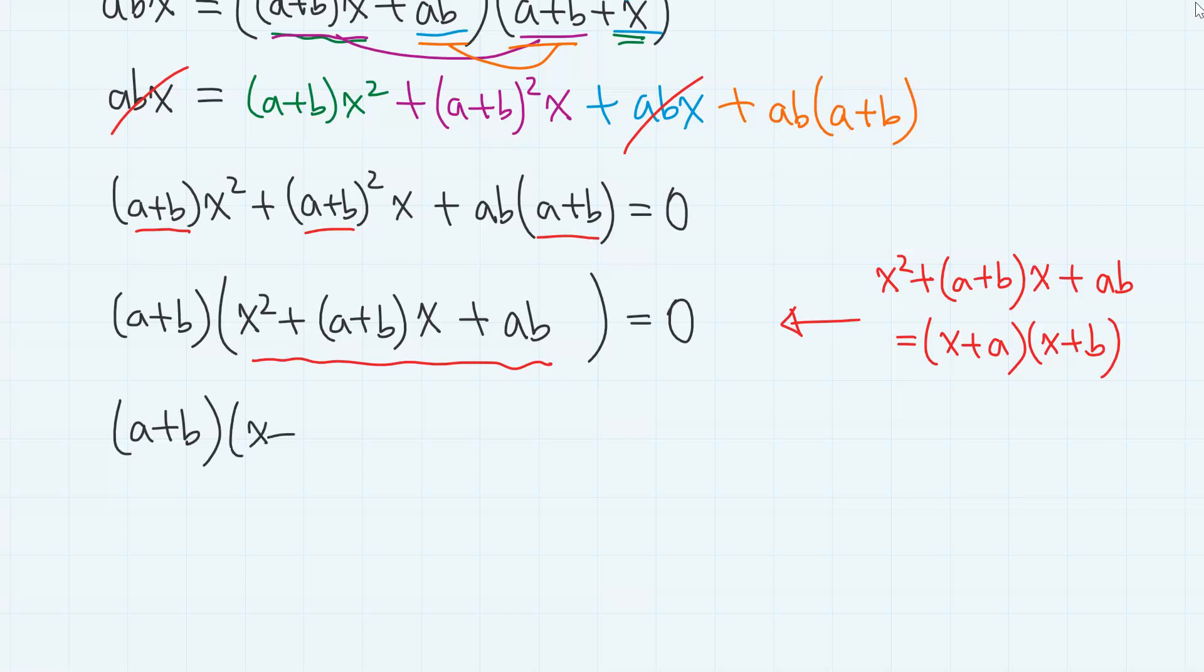So we have a plus b times x plus a times x plus b equals 0. So we have a plus b equals 0, or x plus a equals 0, or x plus b equals 0.